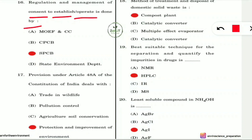Question 16: Regulation and management of consent to establish or operate is done by whom? It is done by the SPCB — the State Pollution Control Board — which regulates and manages consent to establish or operate any facility.